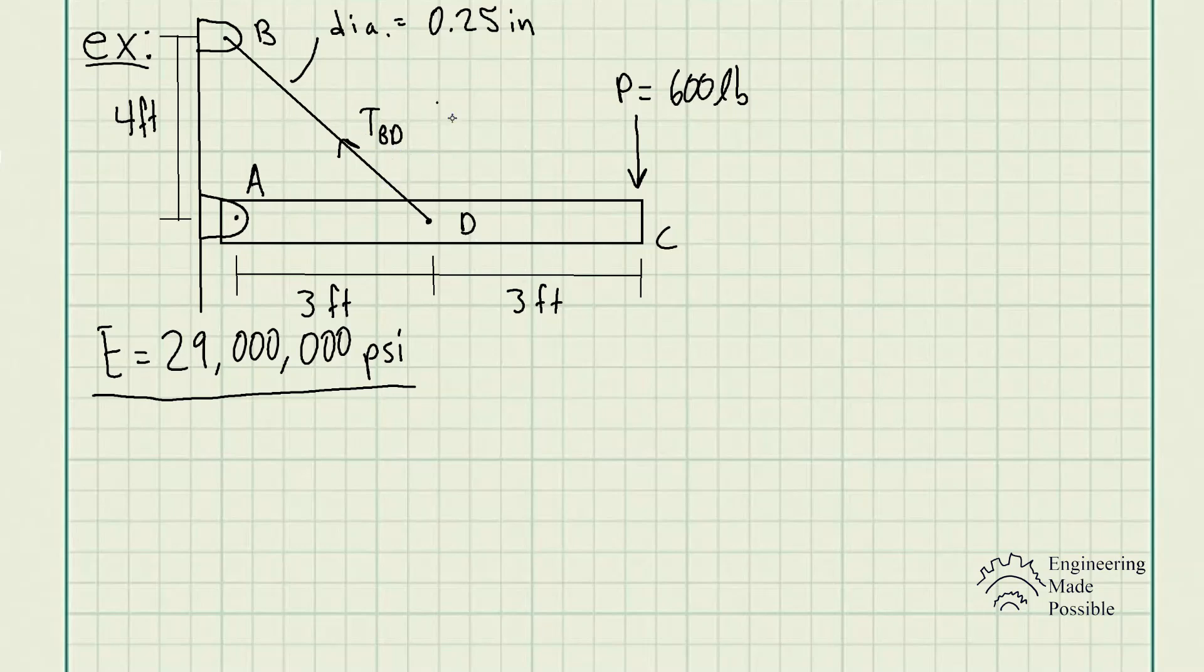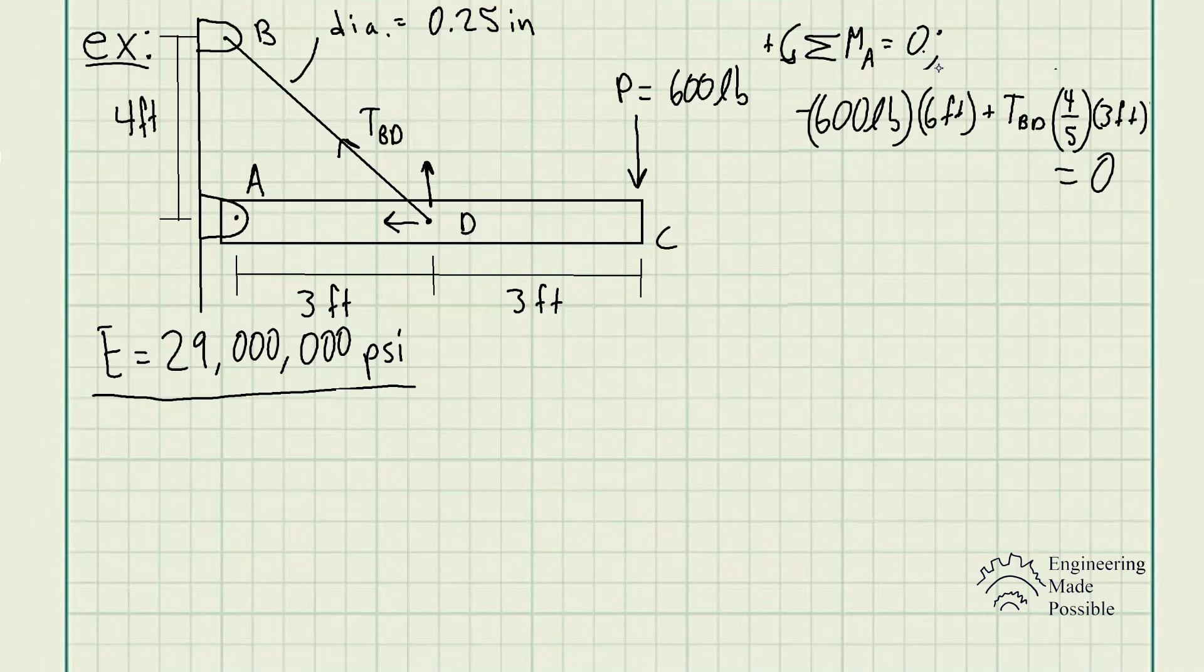Now doing the sum of moments with respect to point A being equal to 0 for static equilibrium, we have the 600 pounds times the perpendicular length to point A, which is 6 feet. This is a negative moment because it's a clockwise moment, and we chose our sign convention counterclockwise to be positive. That tension in the cable has an X component and a Y component. The X component doesn't generate any moment with respect to point A.